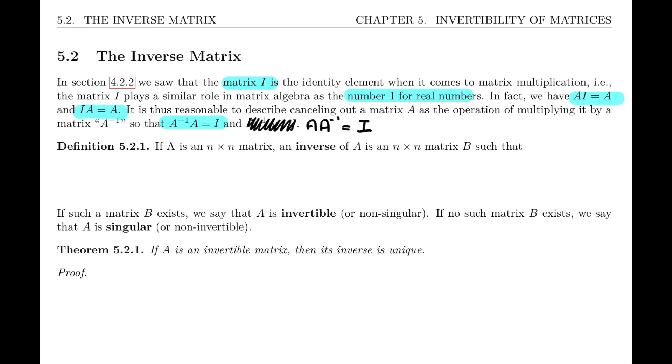If A is an n by n matrix, then an inverse of A is an n by n matrix B, such that AB equals BA equals I. And as you can see, we've defined the inverse for square matrices. So A is an n by n matrix, and those are the only matrices for which we will define an inverse matrix.